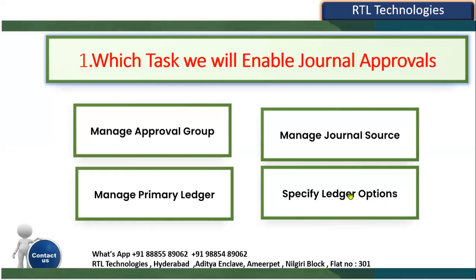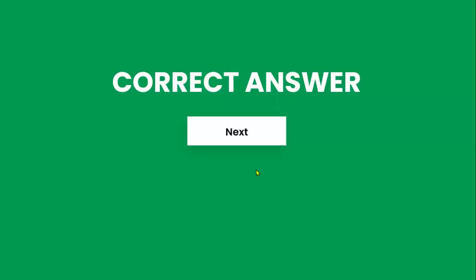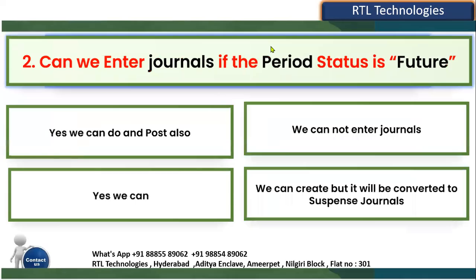That is the correct answer for question one. Now the second question: can we enter journals if the period status is Future? When defining the ledger, we define a calendar with periods that can have Open, Closed, Permanently Closed, Future Interval, or Future status. If the period is in Future status, will the system allow journal creation or not?